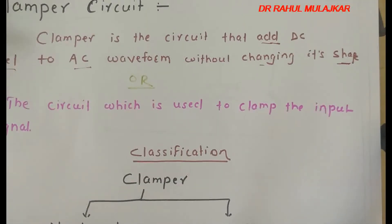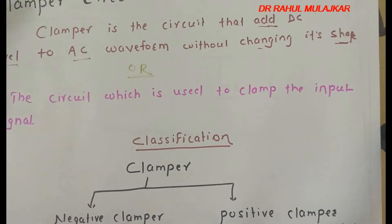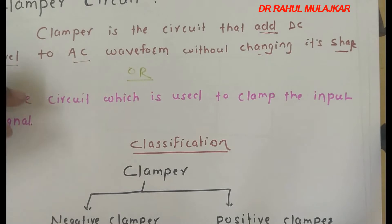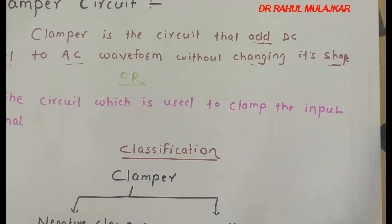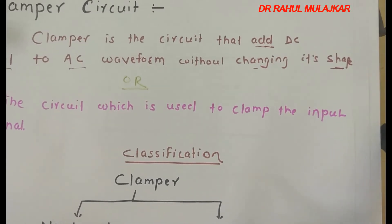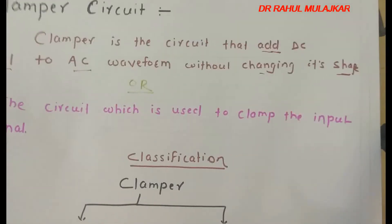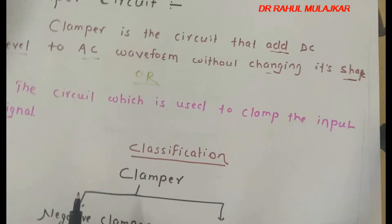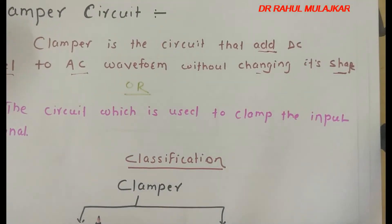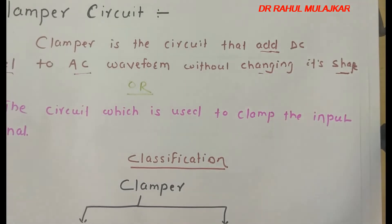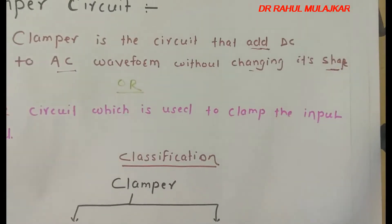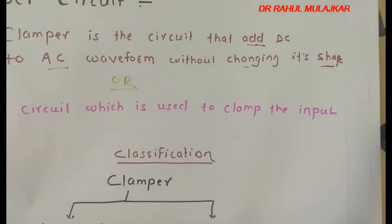Clampers are generally classified into negative clamper and positive clamper. In a negative clamper, the waveform shifts in the downward direction towards the negative cycle. In a positive clamper, the waveform shifts in the upward direction towards the positive cycle. When you apply an external biasing supply, we get negative clamper with biasing and positive clamper with biasing.